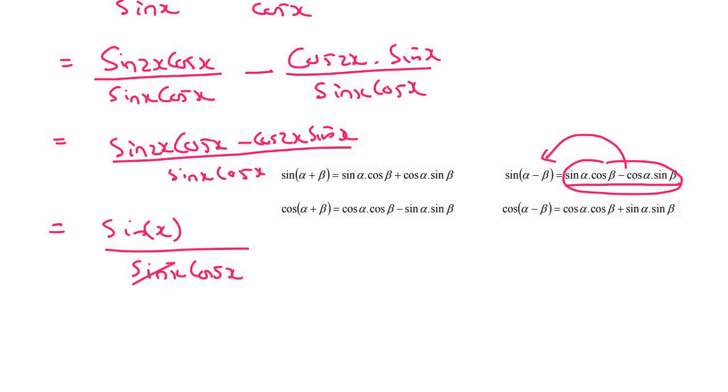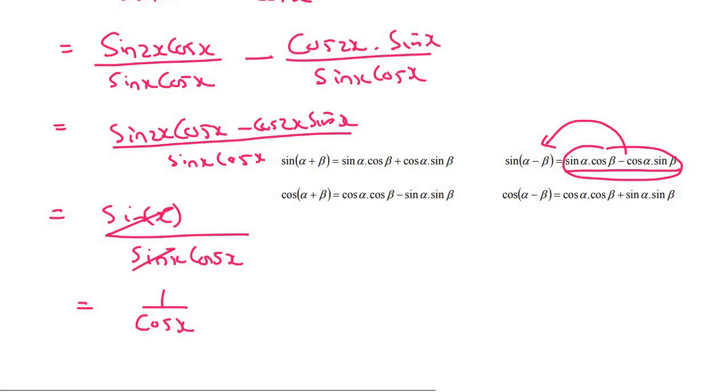So that sin x cancels with that sin x, and then we're left with 1 over cos x. And that's what we've been trying to get. And so therefore, our left hand side is now the same as our right hand side.